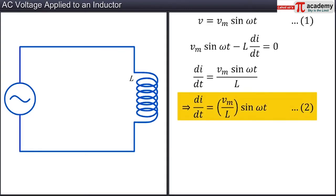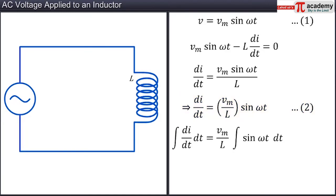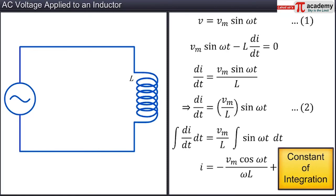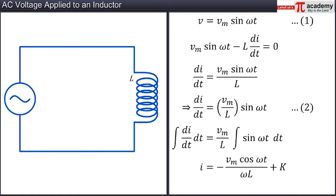Equation 2 is a simple differential equation. It tells us that the first derivative of the current with respect to time is a harmonically varying quantity with an amplitude Vm by L and an angular frequency omega. This implies that this derivative is in phase with the applied potential difference. Integrating equation 2 with respect to time, we get the value of the current in the circuit as I equal to minus Vm cos omega t by omega L plus the constant of integration. Let this be equation 3.